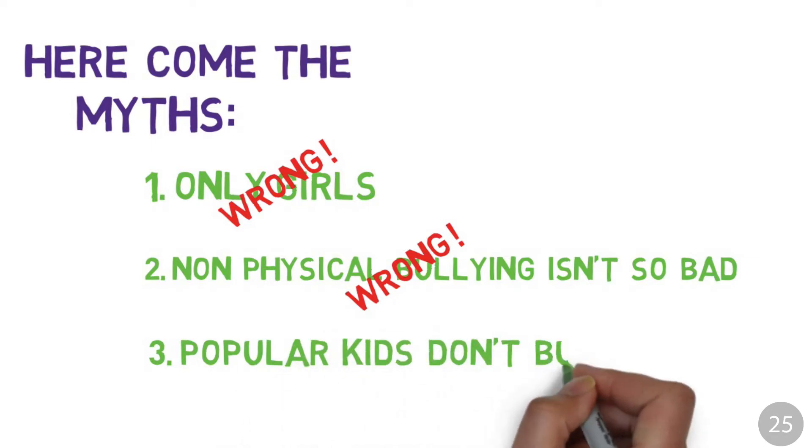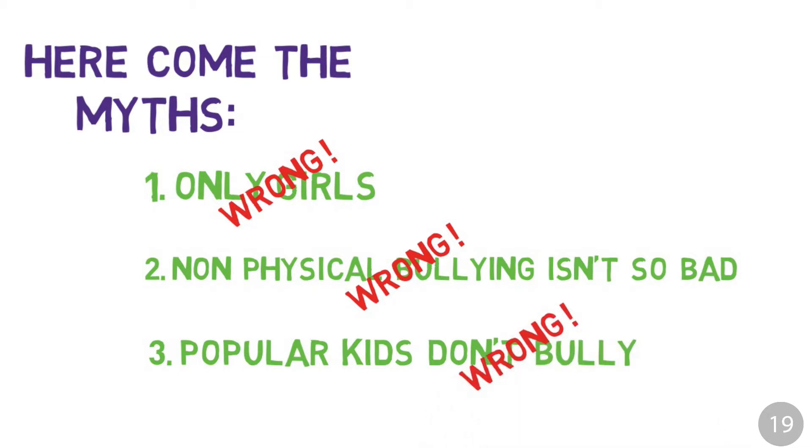Myth three: Popular students don't engage in bullying others. Relational aggression is driven by the desire to weaken another's social status in order to boost your own standing, so sometimes the most popular students will systematically undermine others in an attempt to remain top dog.